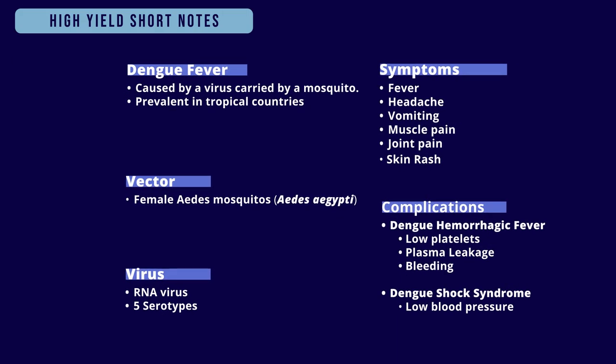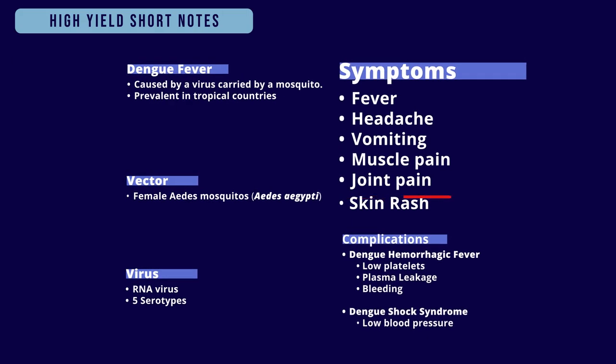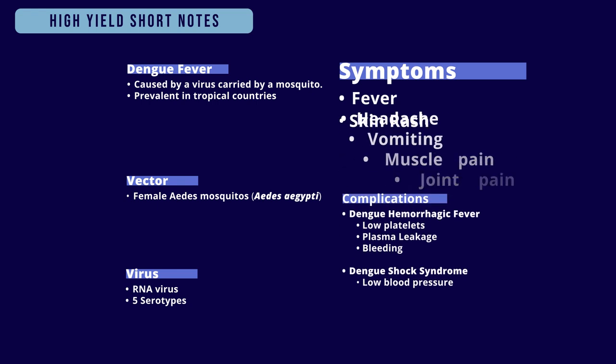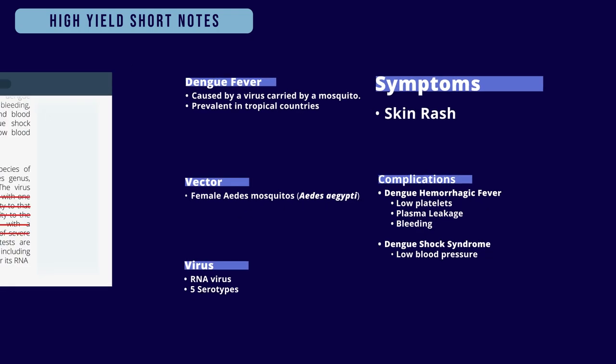Now look at the symptoms. Fever, headache, vomiting, and body aches are common to most mosquito-borne virus diseases. I can omit them because there's no need to memorize facts that are common sense. The only symptom I want to remember is the characteristic rash.